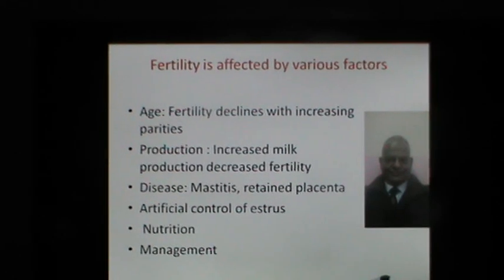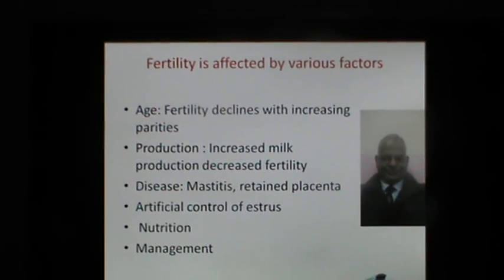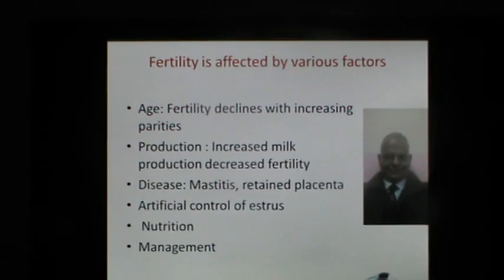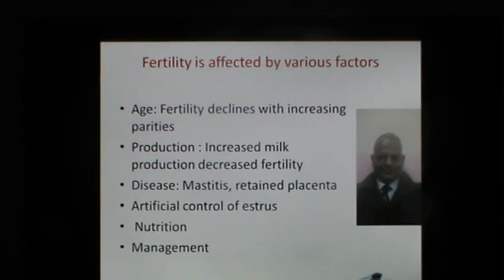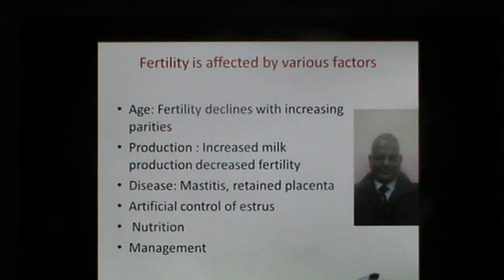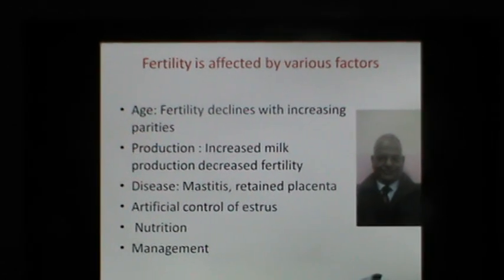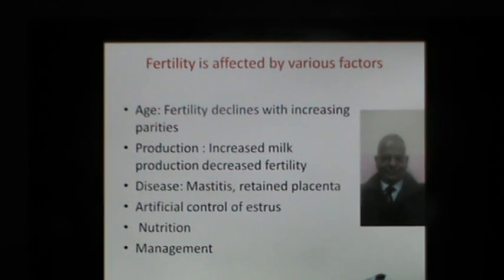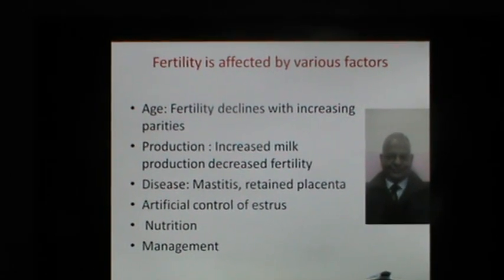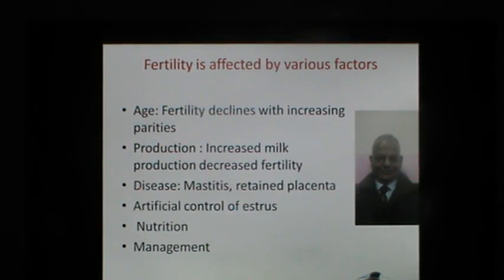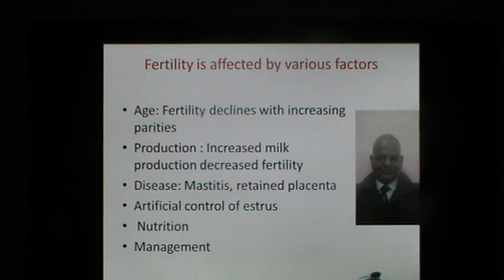Fertility is affected by various factors such as age — fertility declines with increasing parities. It is also dependent on production; with increased milk production, fertility is comparatively lower. Diseases such as mastitis or retained placenta may affect the fertility of dairy cows. The artificial control of estrus may also affect fertility. Nutrition and management are two factors which regulate the fertility of dairy cows.